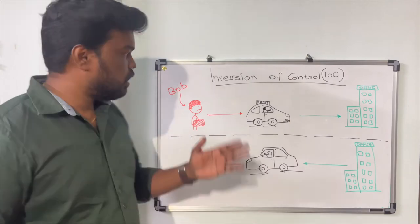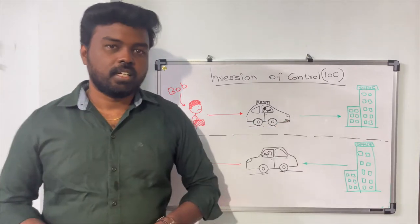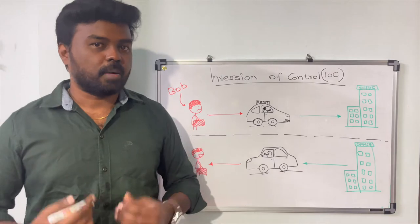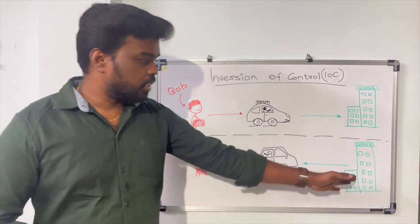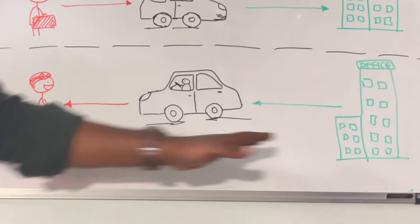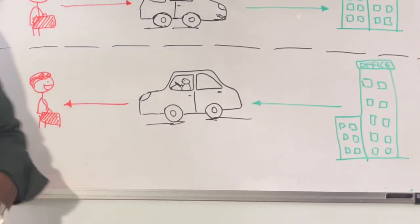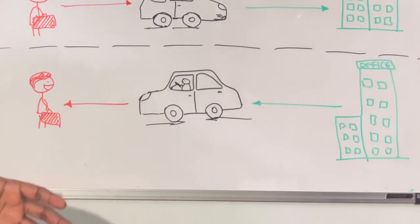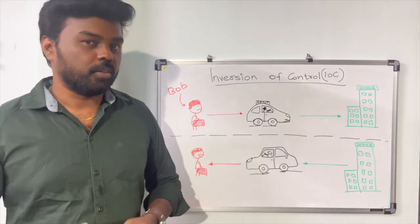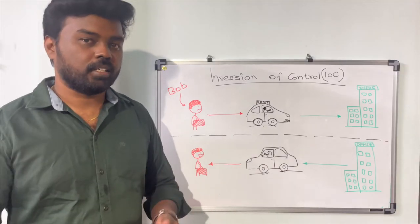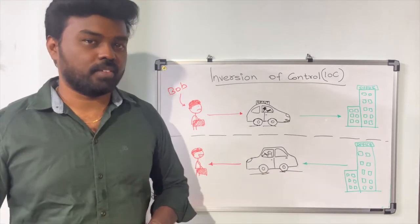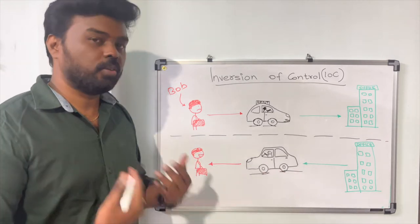Bob raised this concern to the office, and the company decided to solve the problem by sending a car to Bob every morning to pick him up. Now Bob is very happy because he doesn't have to spend time finding a rental car, doesn't have to manage expenses, and doesn't have to supply directions since the car comes from the office and already knows the way.